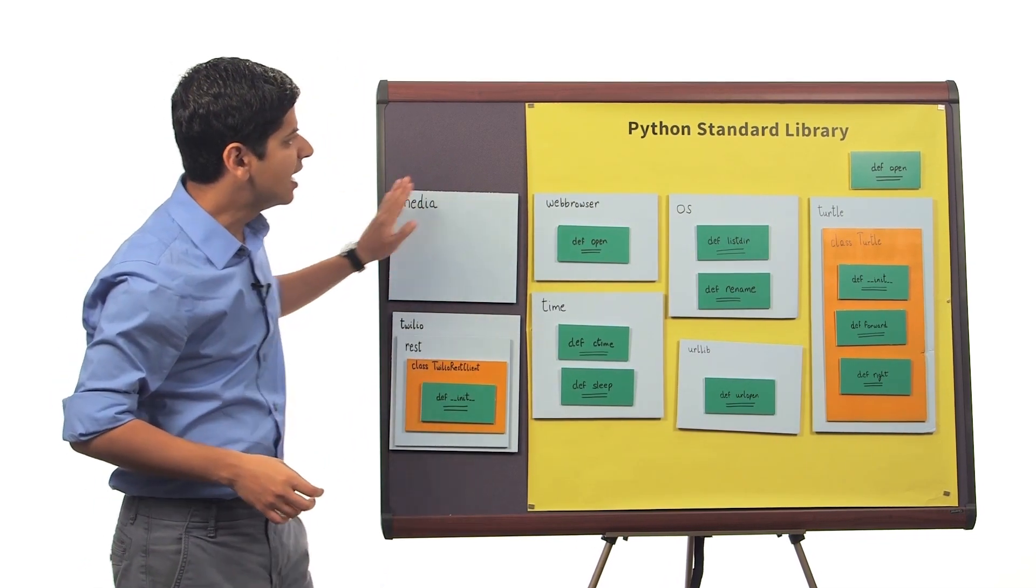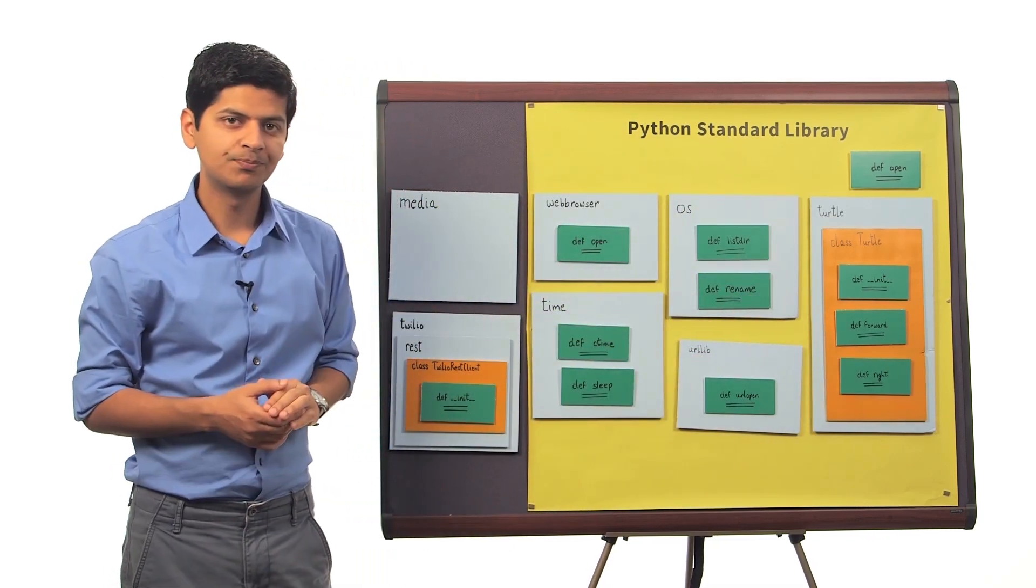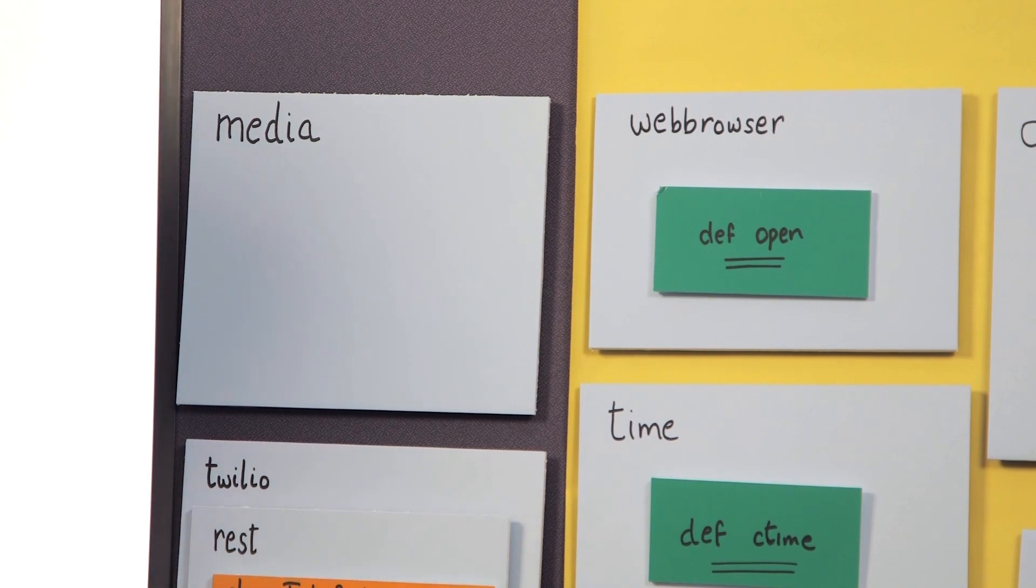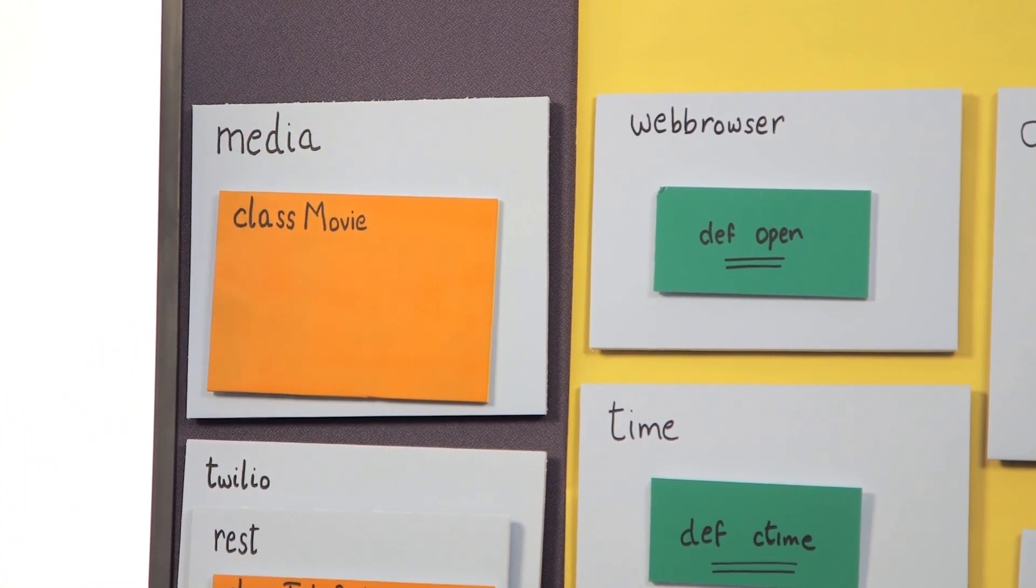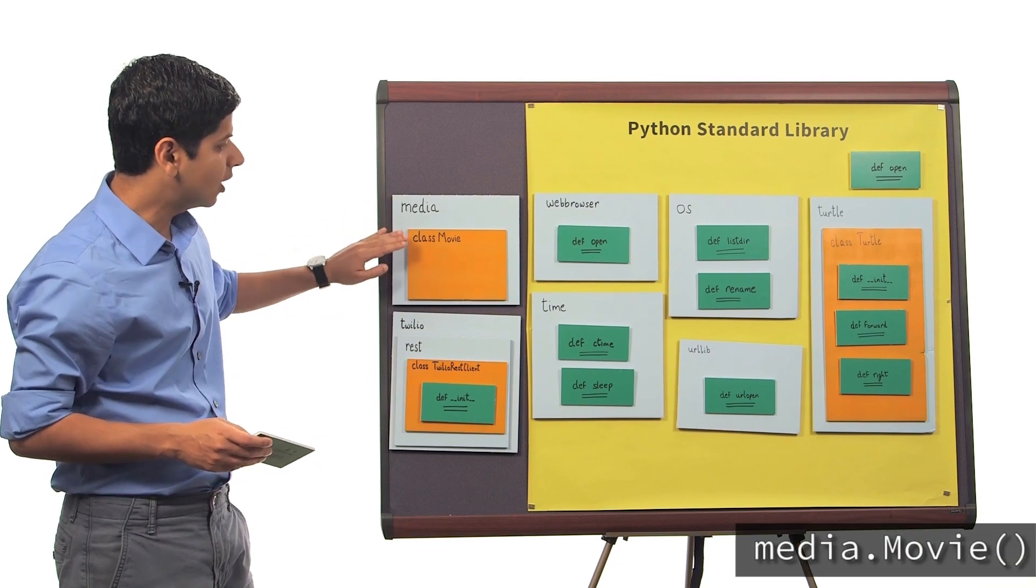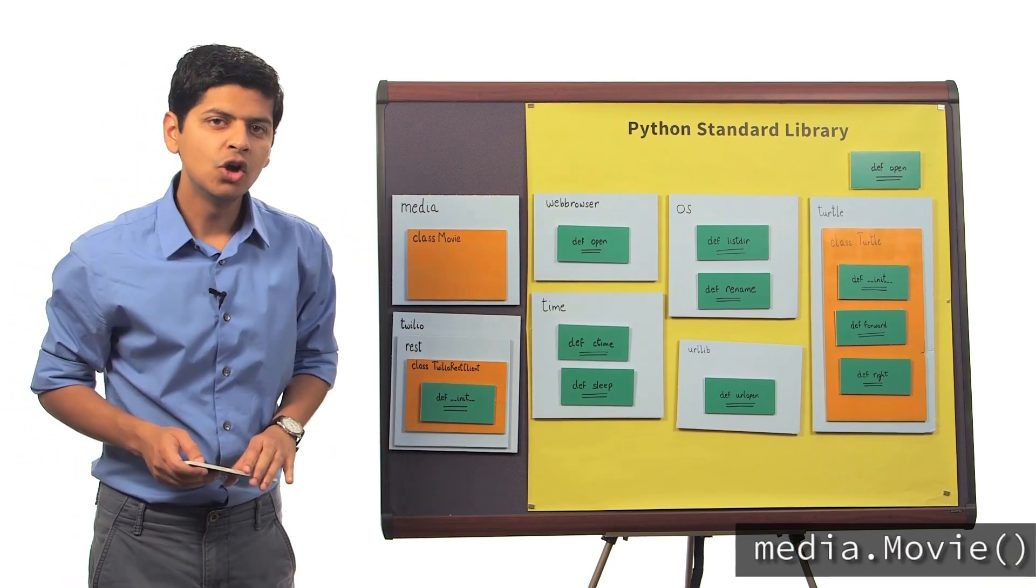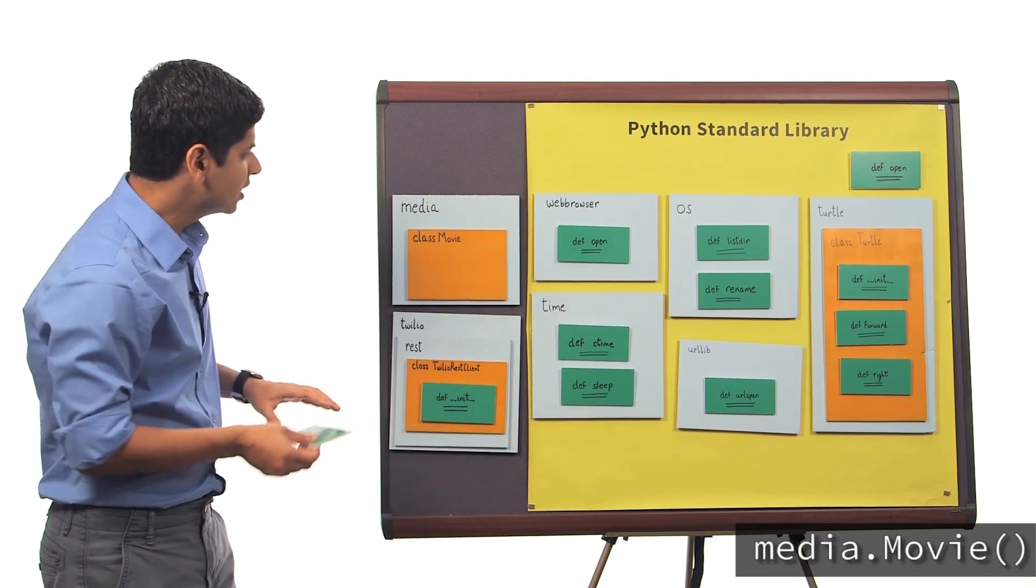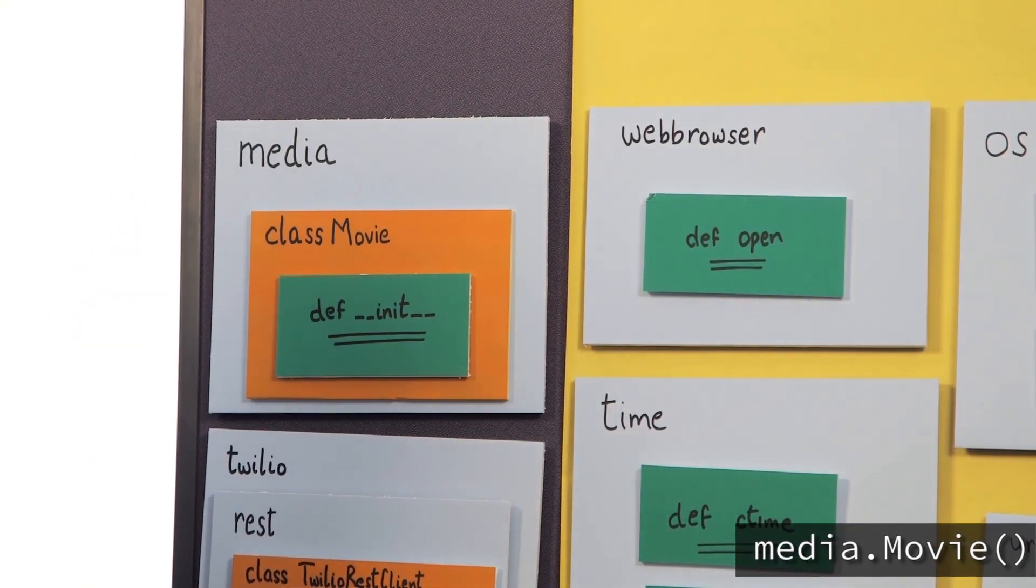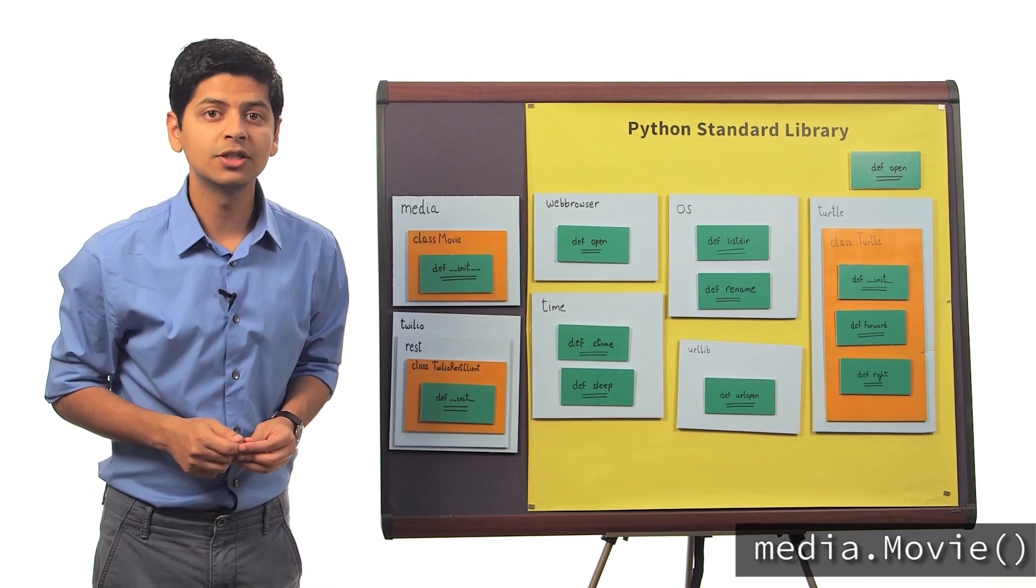Notice that I placed this file outside the Python standard library. Inside that file, we then defined a class called movie. After that, we wrote a line of code that said media.movie, and what that did was call the init function defined inside class movie. And that created a new instance that we called toyStory.